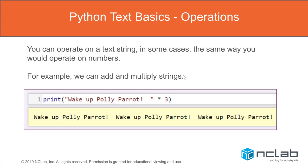You can perform operations on text strings — in some cases just like you would on numbers. For example, we can add and multiply text strings. Here I've multiplied 'wake up Polly Parrot' three times and asked it to print that out, and sure enough it prints 'wake up Polly Parrot' three times. I included blank spaces in the text string so when I print it out I have a nice space between each command.